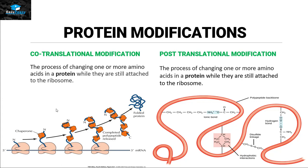Folding comes under the category of modification, so this type is called co-translational modification. On the other hand, post-translational modification means that once the process of translation has ended, the protein is no longer attached to the ribosome, and now the process of changing one or more amino acids or attachment of a non-protein part occurs to this protein. This type of modification is called post-translational modification.